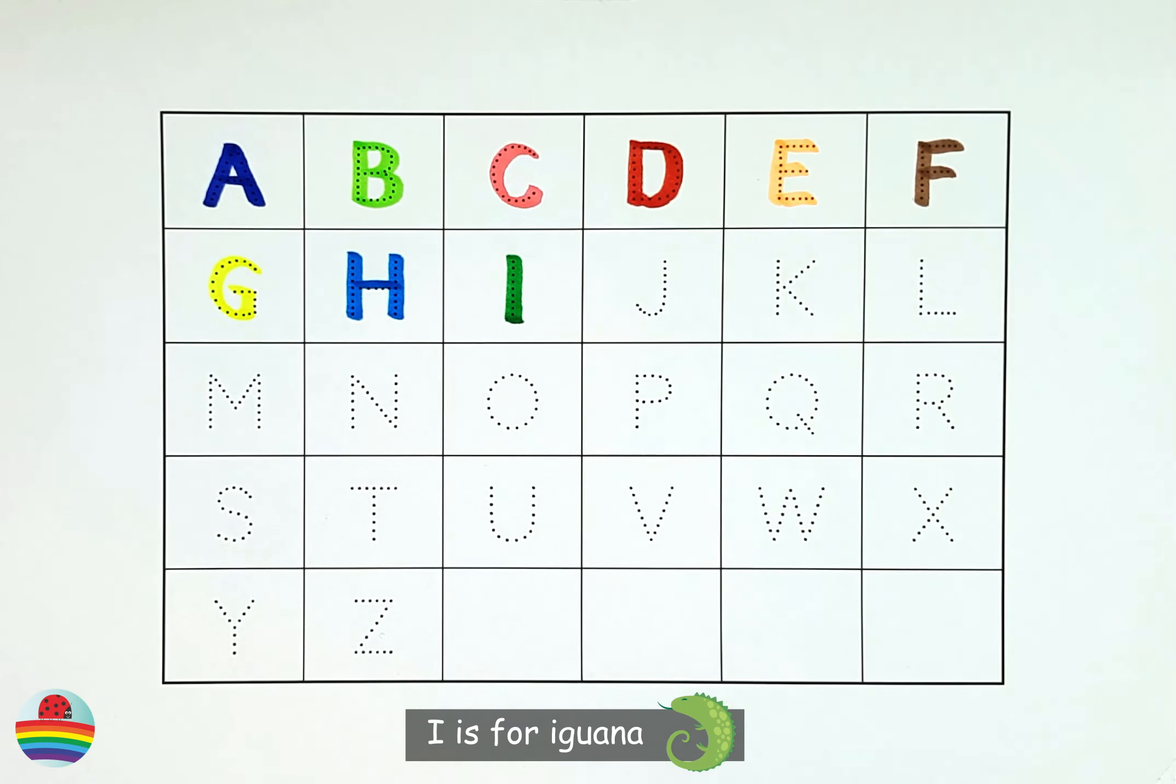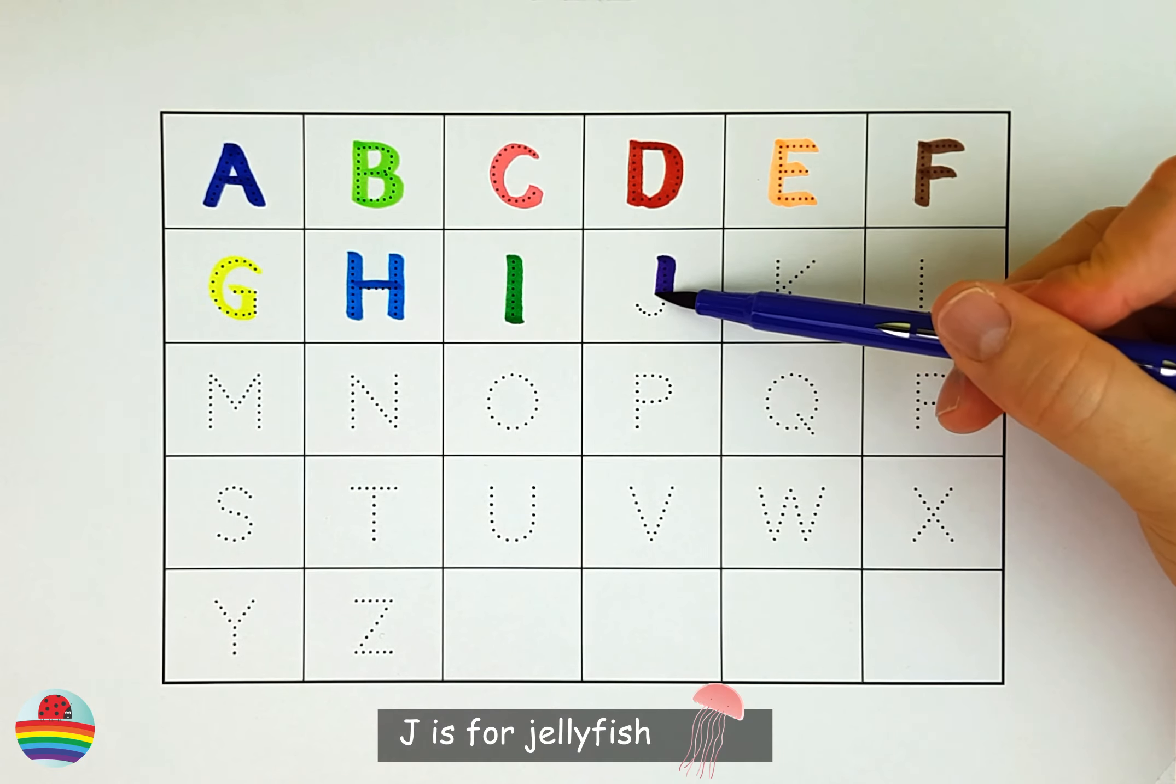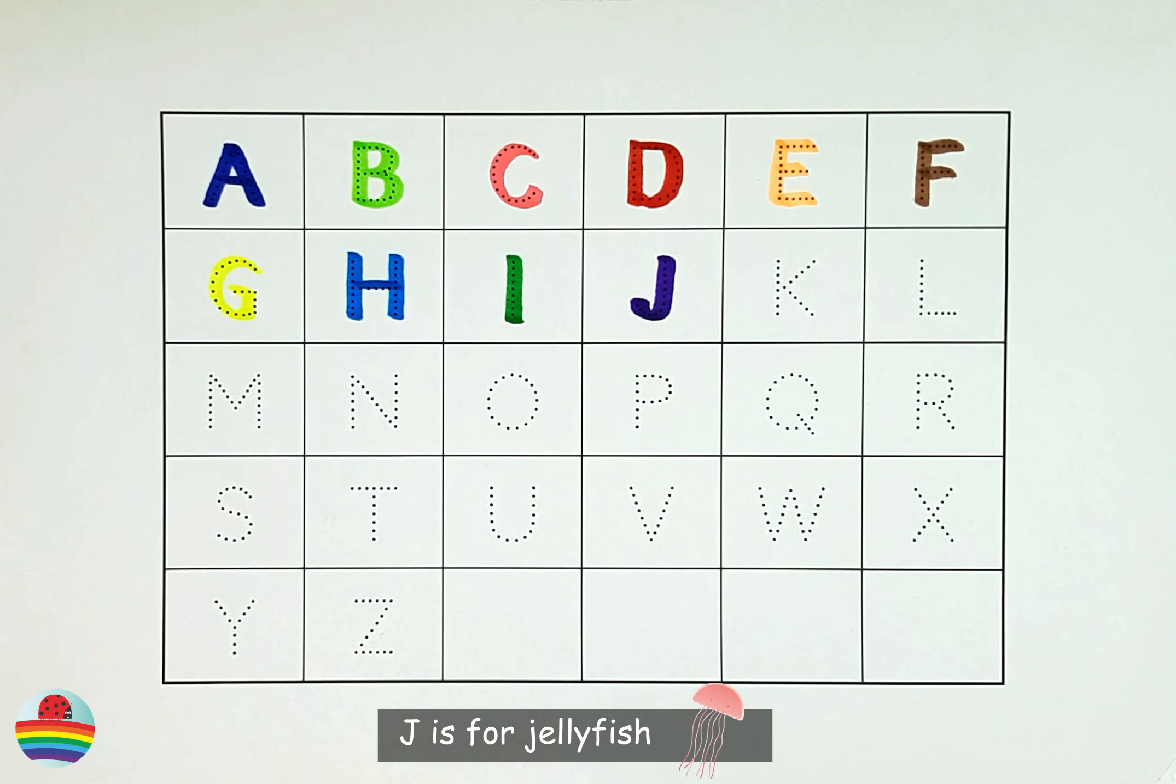I. I is for iguana. J. J is for jellyfish.